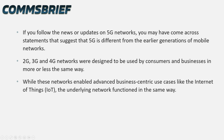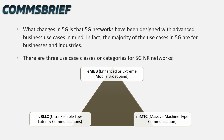2G, 3G, and 4G networks were designed to be used by consumers and businesses in more or less the same way. While these networks enabled advanced business-centric use cases like the Internet of Things (IoT), the underlying network functioned in the same way. What changes in 5G is that 5G networks have been designed with advanced business use cases in mind. In fact, the majority of the use cases in 5G are for businesses and industries.